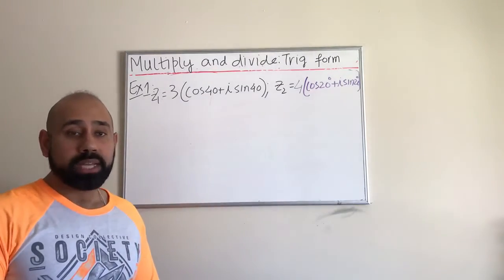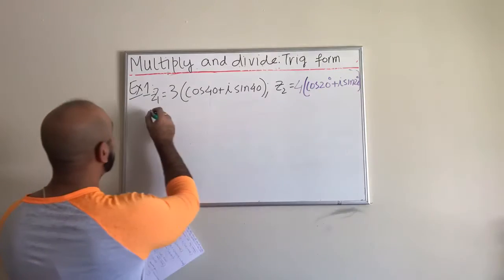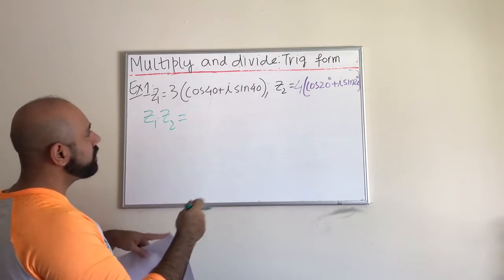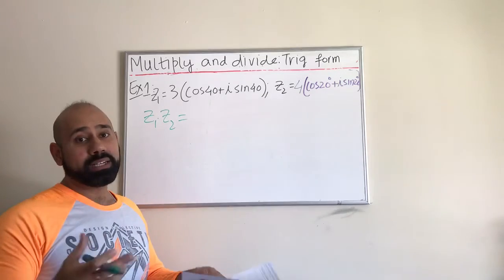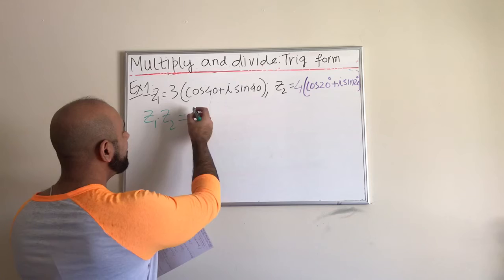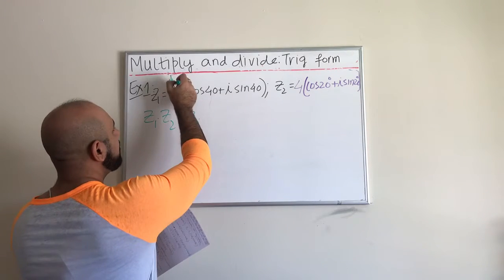Let us look at example one where we have to take the product of two complex numbers which are expressed in their trig form. So we want to find Z1 times Z2. In order to find Z1 times Z2, we have to recall the fact that the product of two complex numbers can be evaluated by just taking the product of their respective absolute values R.